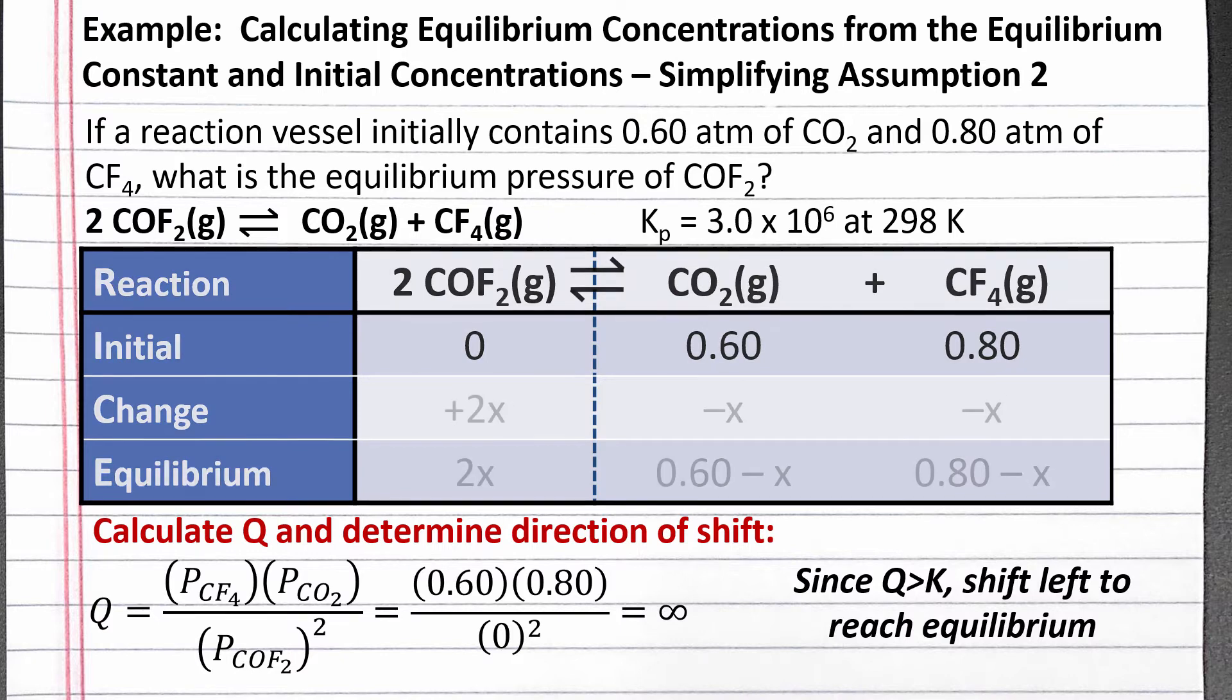This means we will have plus 2x, minus x, and minus x for our change row. The coefficients 2, 1, and 1 come from the coefficients in the balanced chemical equation.